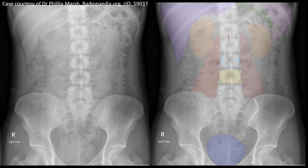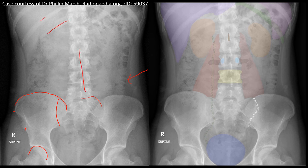This is the plain anteroposterior view of the abdominal region showing the anterior superior iliac spine, anterior inferior iliac spine, iliac crest, posterior superior iliac spine, posterior inferior iliac spine, sacroiliac joint, head of the femur, sacrum, coccyx, as well as the vertebrae, ribs, and soft tissues like liver, spleen, kidney, muscles, large intestine, and small intestine, without any visible abnormality.